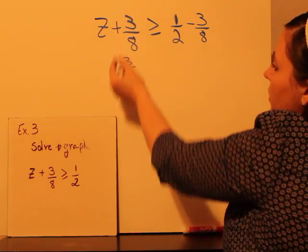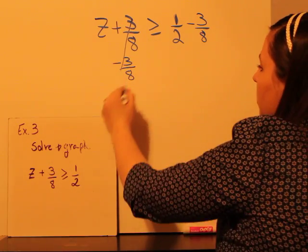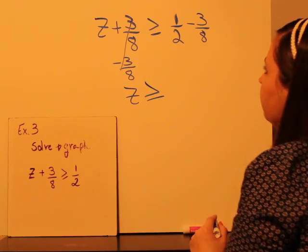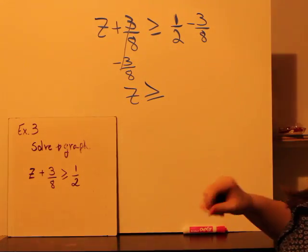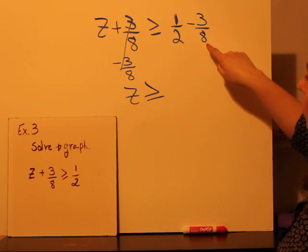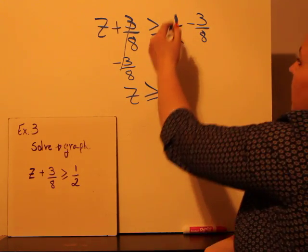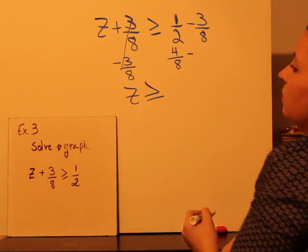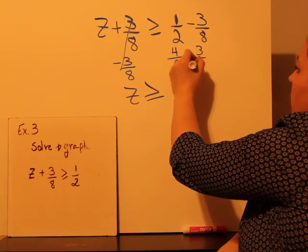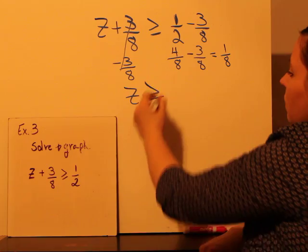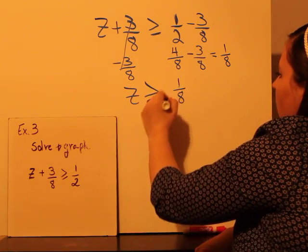So over here, positive and negative cancel. We just have z greater than or equal to. Then we got 1 half minus 3 eighths. We need a common denominator. 1 half, if we're going to turn that into eighths, we know that that's going to be 4 eighths. So we got 4 eighths minus 3 eighths, which is equal to 1 eighth. So z is greater than or equal to 1 eighth.